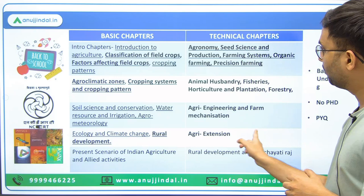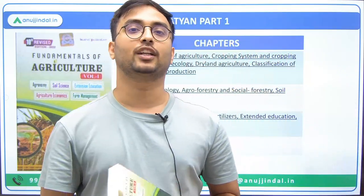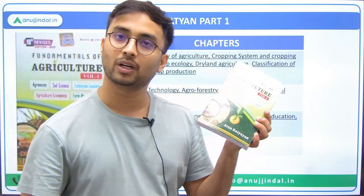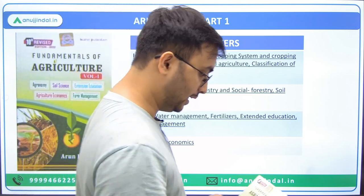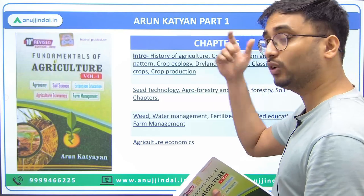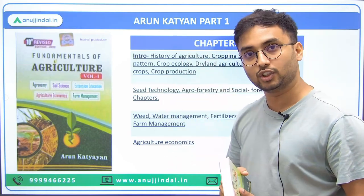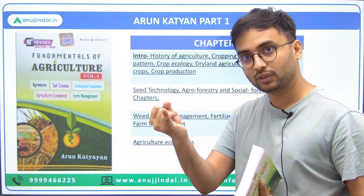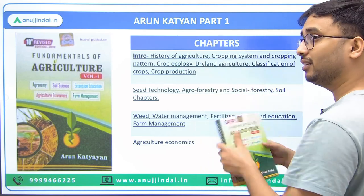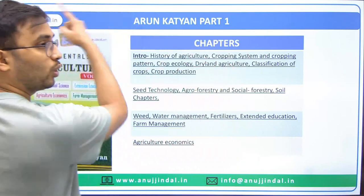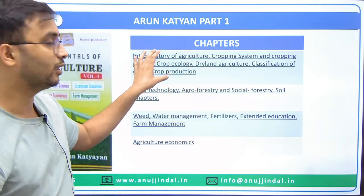Now let's move to how to read the recommended books. Starting with Arun Kattyan volume one — the first phase begins with an intro section. I've clubbed chapters related to intro and history of agriculture, which are also in the NABARD syllabus: definition of agriculture, classification, history of agriculture, cropping system, cropping patterns, crop ecology, dryland agriculture, and crop production.